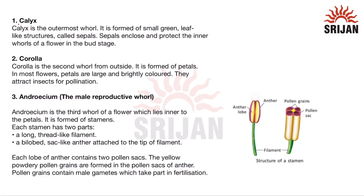The first part of the flower is the calyx. It is the outermost whorl, formed of small green leaf-like structures known as sepals. Sepals enclose and protect the inner whorls of a flower in the bud stage.